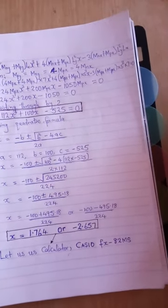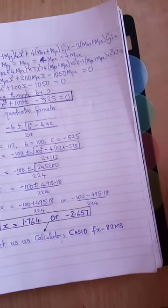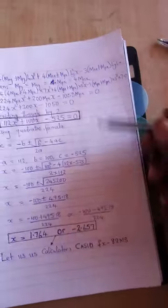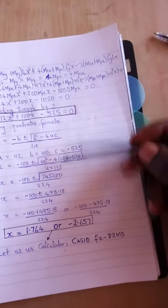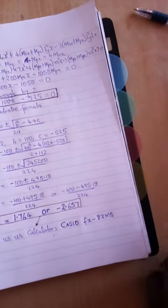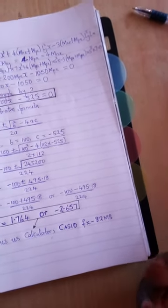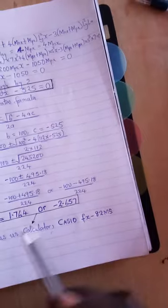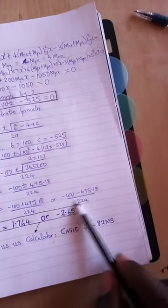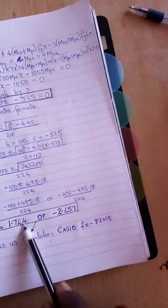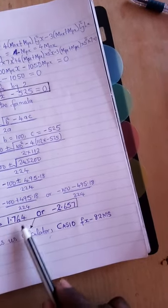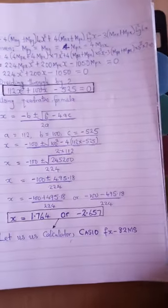I have calculated this quadratic equation using the quadratic formula. This is the answer I got. In engineering or anything that has to do with something measurable, we have to use only the positive answer and discard the negative one. Actually, the positive value that is the answer is 1.764.